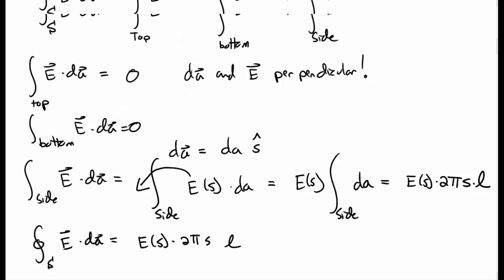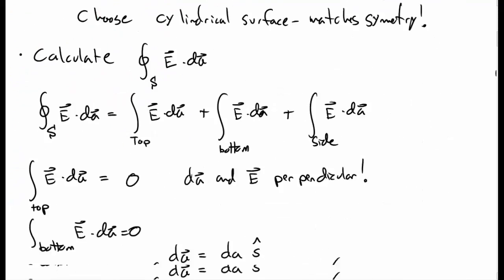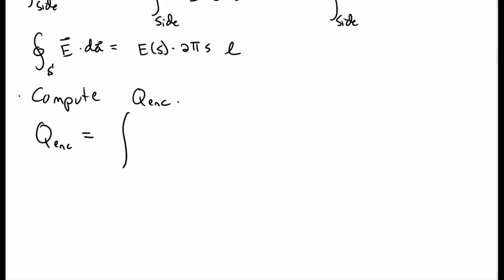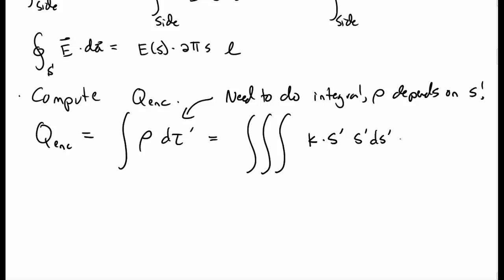Now we need to compute q-enclosed, the charge enclosed in our Gaussian surface. Unlike other cases, we can't just immediately write this down — we actually have to calculate it by an integral over rho d-tau, because the volume charge density rho depends on s. So we have a triple integral: rho is k s-prime, the volume factor is s-prime ds-prime d-phi-prime dz-prime. The s integral goes from 0 to s, phi from 0 to 2π, and z from 0 to L.